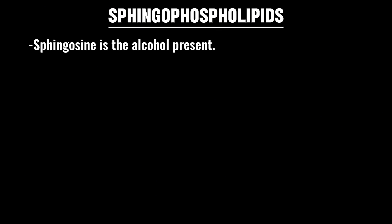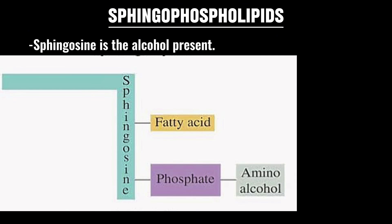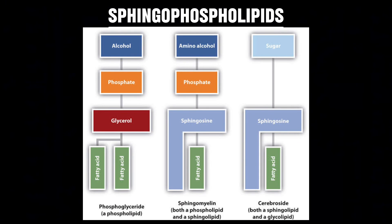The second type of phospholipids are the sphingophospholipids. In this phospholipid, sphingosine — which is an amino alcohol — is present. Sphingophospholipids do not contain glycerol at all. The sphingosine is attached by an amide linkage to a fatty acid to produce ceramide, and the alcohol group of sphingosine is bound to phosphorylcholine in sphingomyelin.